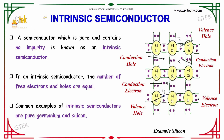A semiconductor which is pure and contains no impurity is known as an intrinsic semiconductor. Here is a typical example of silicon with 4 valence electrons on the outside.